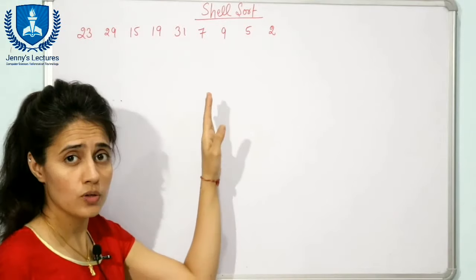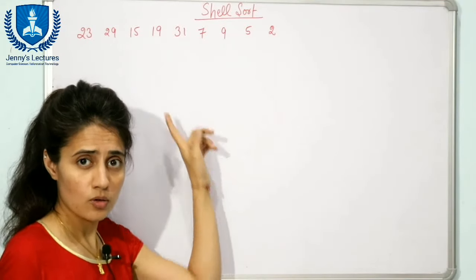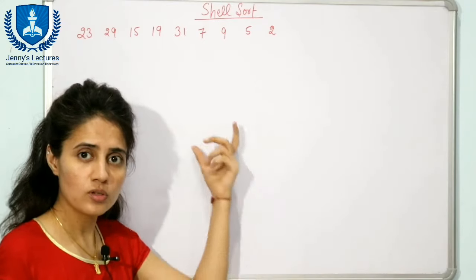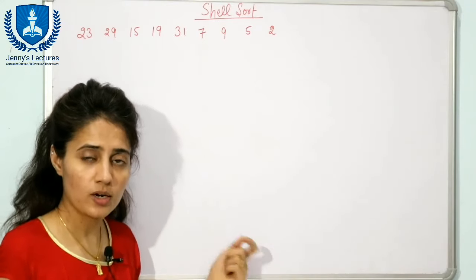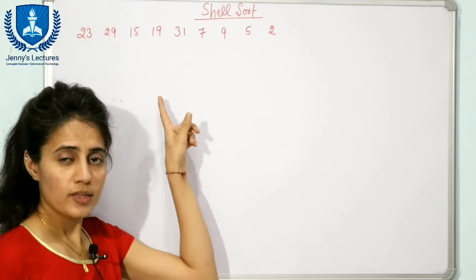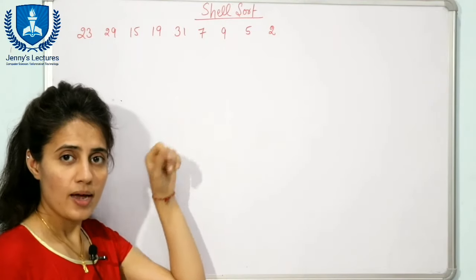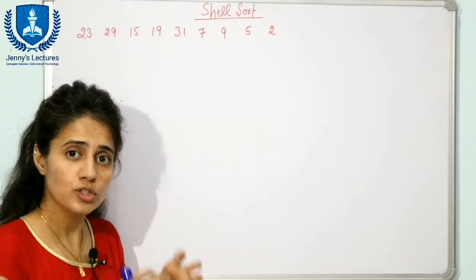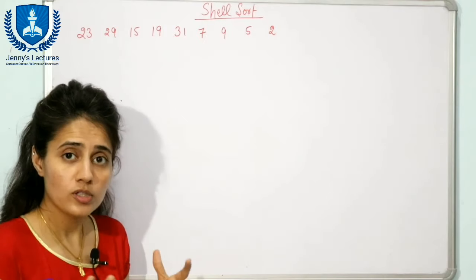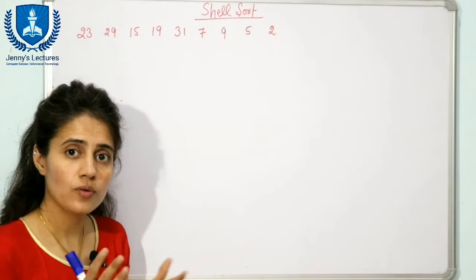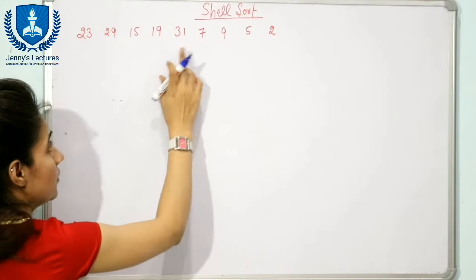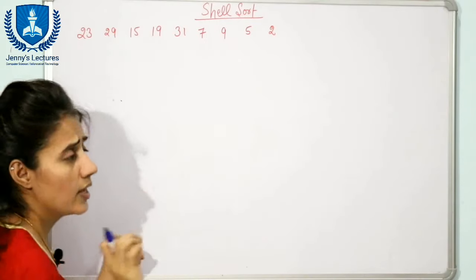We are going to see how shell sort will work on this array, and we will also write a piece of code for shell sorting and discuss its time complexity. First, we are going to take this example and see how shell sort is different from insertion sort — or in other words, what are the advantages of shell sort over insertion sort.